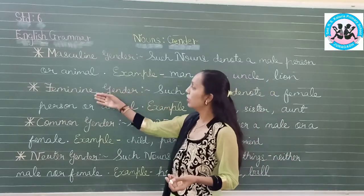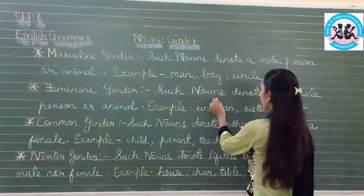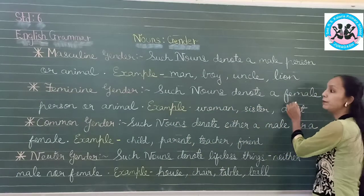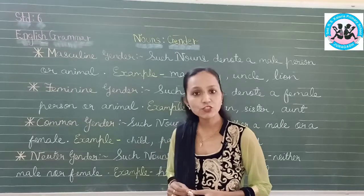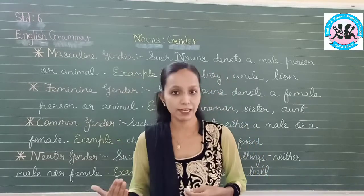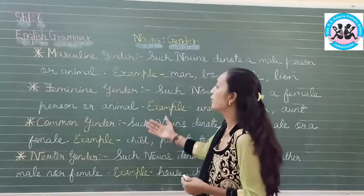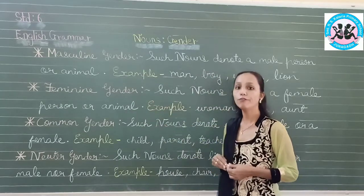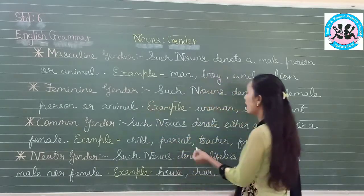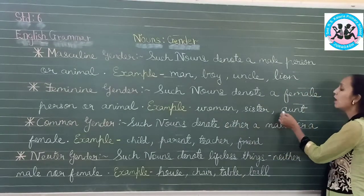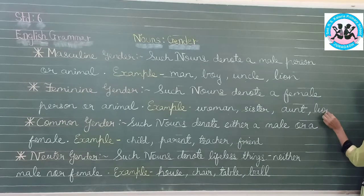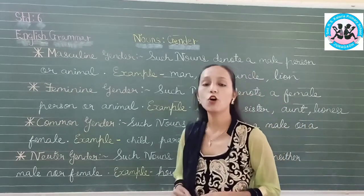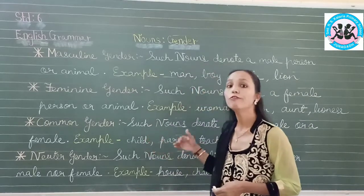Next we have the feminine gender. Such nouns denote a female person or animal. Feminine genders always refer to females — either female person or female animal. Examples: woman, sister, aunt. Remember that feminine genders always refer to females.